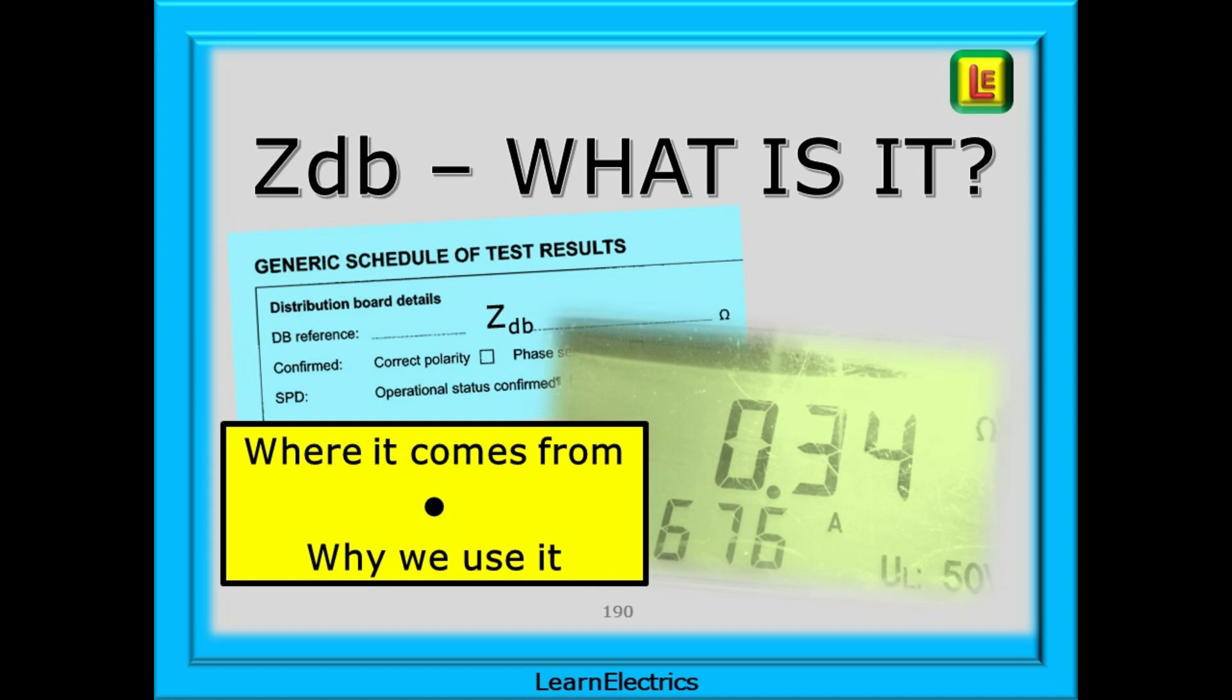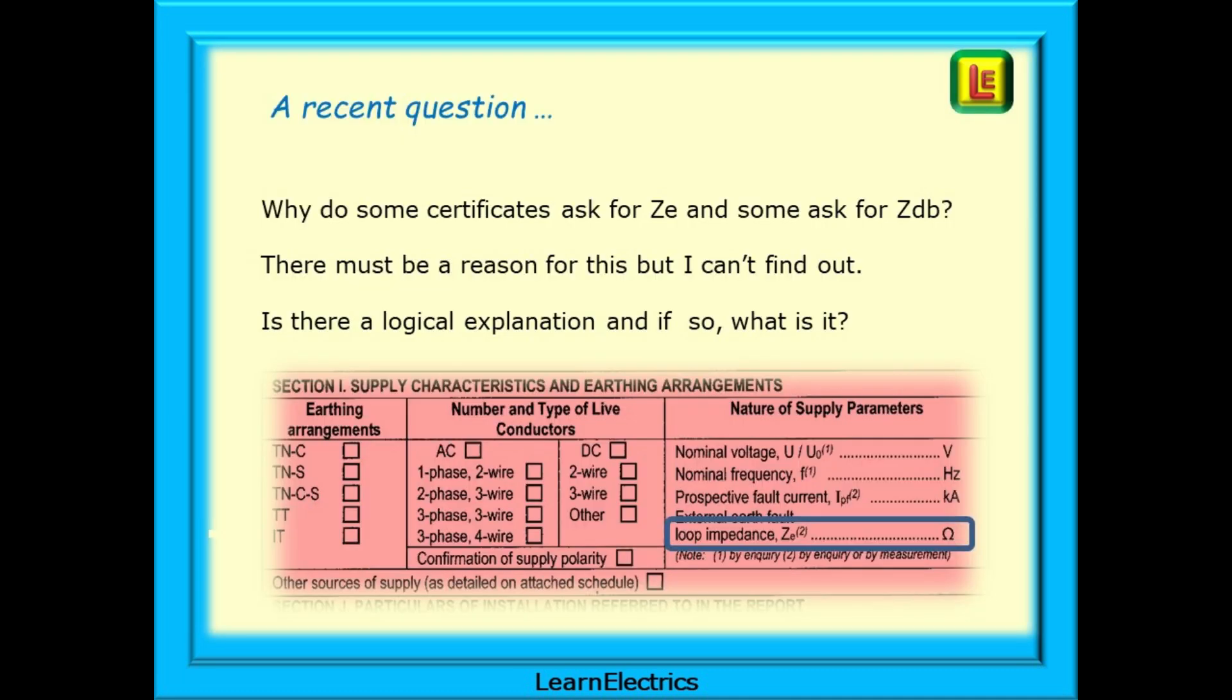In this Learn Electrics video we will look at the measurement of Zdb, this mystery symbol that pops up on the schedule of test results. A recent question asked us why do some certificates ask for Zd and some ask for Zdb? There must be a reason for this but I can't find out. Is there a logical explanation and if so what is it? Let's look at this in steps.